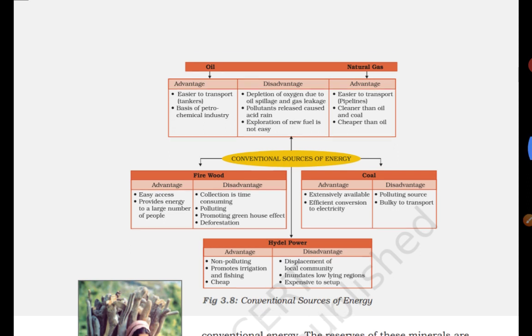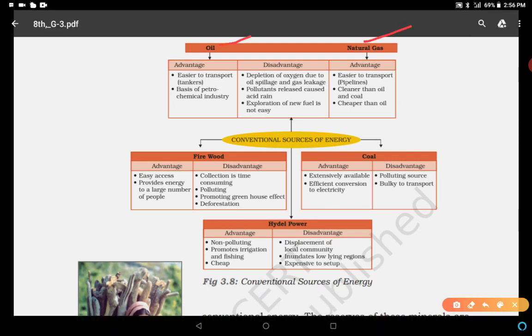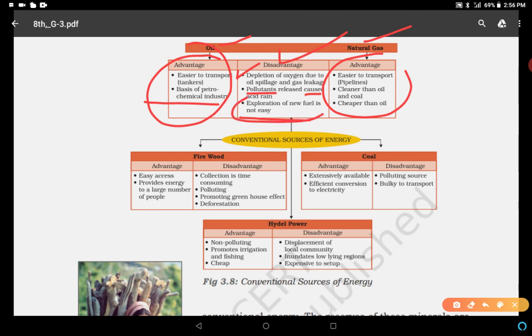These are the conventional sources of energy — look very carefully at the advantages and disadvantages. Oil: easier to transport in tankers, and it is the base of petrochemical industries. Natural gas: easier to transport through pipelines, cleaner than oil and coal, and cheaper than oil. But disadvantages are depletion of oxygen due to oil spillage and gas leakage, pollutants released cause acid rain, and exploration of new fuel is not easy — it is very difficult to extract oil and natural gas from under the earth.